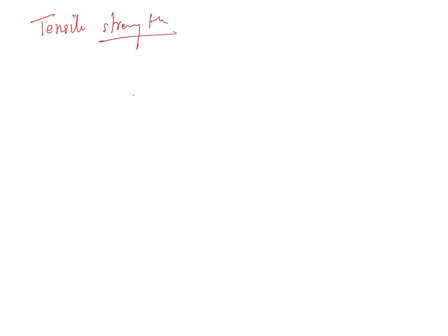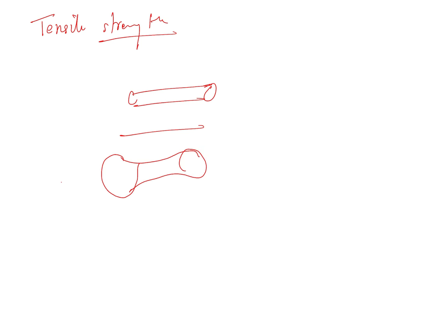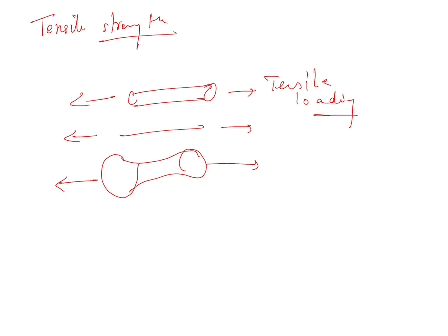Tensile strain can be determined by subjecting a rod, wire, or dumbbell-shaped specimen to tensile loading. You apply tension at both ends, and then tensile strain can be determined for these specimens.